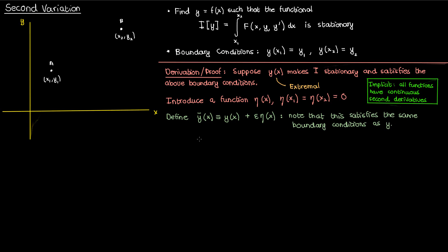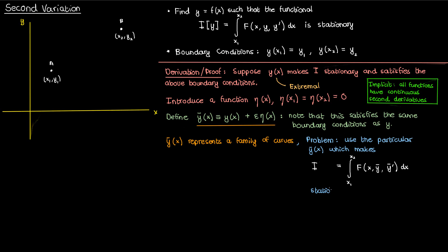The only restriction on y-bar arises from the restrictions we put on y and η earlier, and you can easily verify that because of these restrictions y-bar satisfies the exact same boundary conditions as y. Because of the parameter ε and the arbitrary function η, y-bar can be interpreted as a mathematical entity representing a whole family of curves. I want to use the particular curve in this family that makes our functional i stationary, and by using this curve I'll have used the appropriate function of x to construct my second variation — not a non-stationary function.